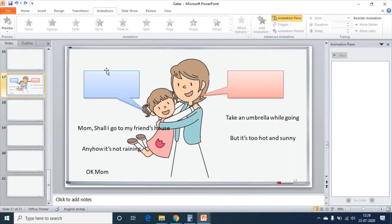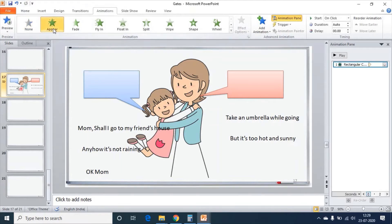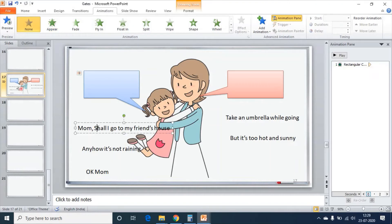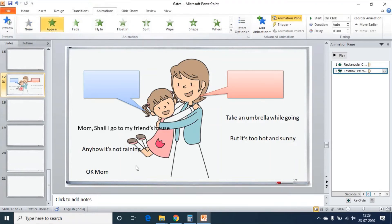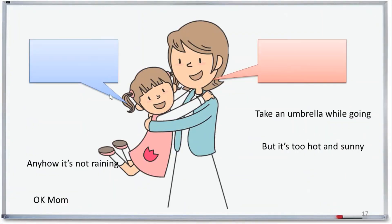I am going into the Animations tab, choosing the callout and clicking Appear. So the first animation is the appearance of the callout. Then I need to get these dialogues. I am selecting this text box and clicking on Appear. But if I see the slide show now, this complete sentence appears at a time. First I got the callout, then I got the complete sentence. But I don't want it that way.